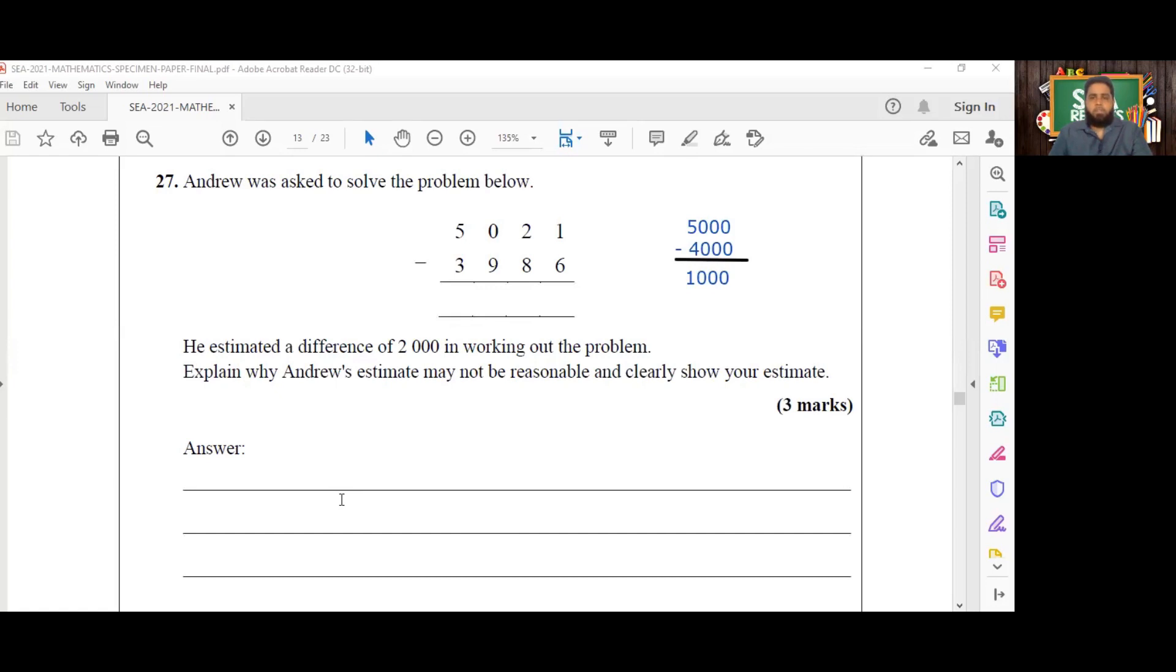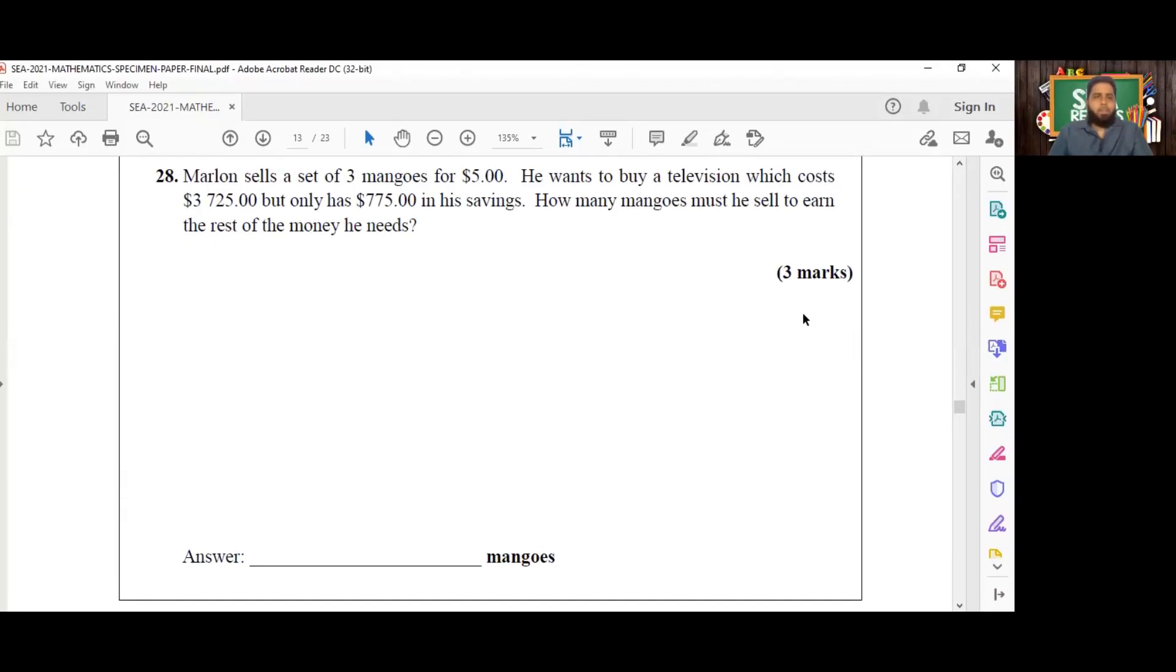So that is what you would put. And of course, our estimate would be 1,000. And in our final question for today, number 28, Marlon sells a set of three mangoes for $5. He wants to buy a television which costs $3,725 but only has $775 in his savings. How many mangoes must he sell to earn the rest of the money he needs?